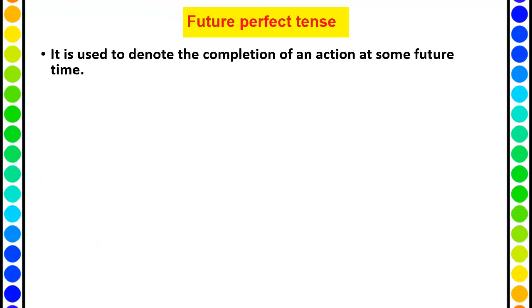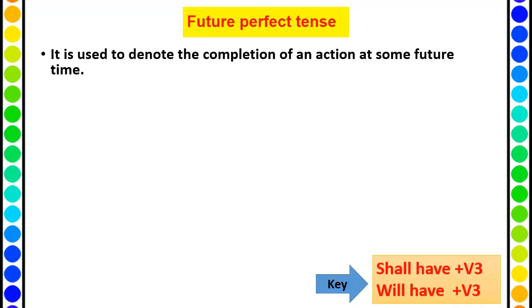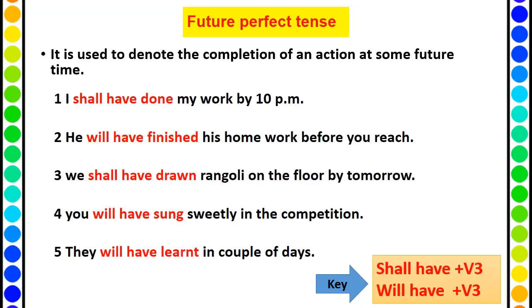Now future perfect tense. It is used to denote the completion of an action at some future time — you want to say that in the future your work will be completed. Keywords: 'shall have'/'will have' plus the third form of the verb. Examples: I shall have done my work by 10 pm. We will have finished his work before you reach. We shall have drawn rangoli on the floor by tomorrow. You will have sung sweetly in the competition. They will have learnt in a couple of days. Notice the verb forms: do-did-done, finish-finished-finished, draw-drew-drawn, sing-sang-sung, learn-learnt-learnt.